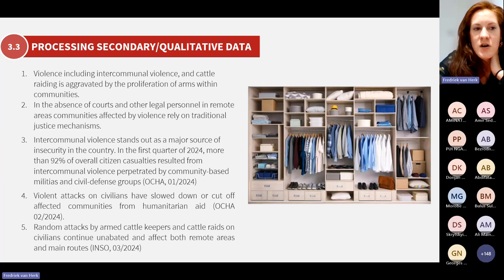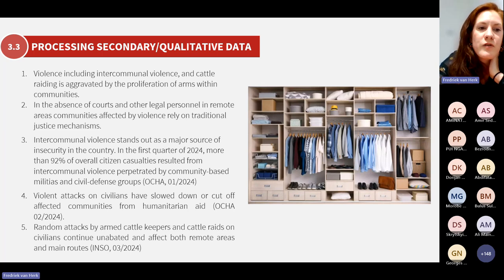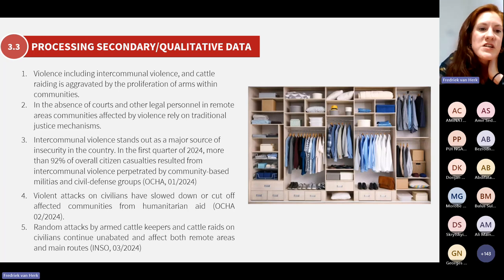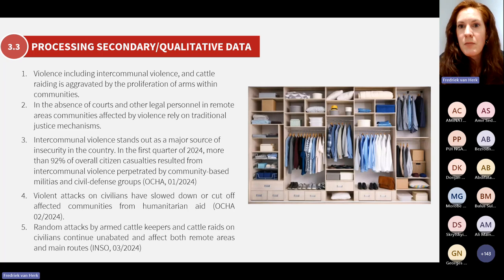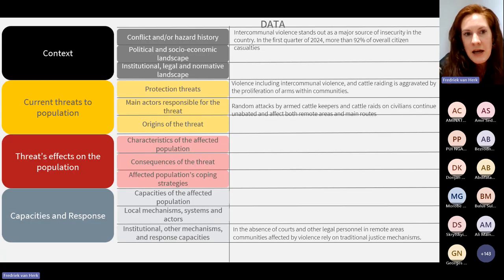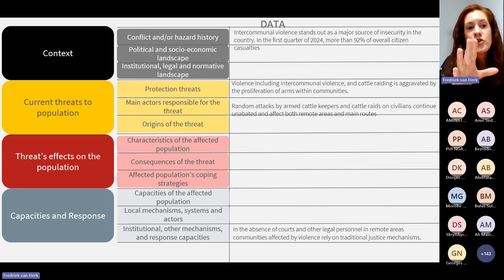Here are a few pieces of text — let's imagine they all came from different reports. For example, in one extract I saw that intercommunal violence stands out as a major source of insecurity: in the first quarter, more than 92% of overall citizen casualties resulted from intercommunal violence perpetrated by community-based militias and civil defense groups (from OCHA). In another piece, random attacks by armed cattle keepers and cattle raids on civilians continue unabated and affect both remote areas (from an NGO report). These pieces of text are important because they speak about risk — intercommunal violence, cattle raiding. So we basically take the protection analytical framework and map our pieces of data, organizing them: this piece goes here under threats, this one goes there — the same text structured against the framework.